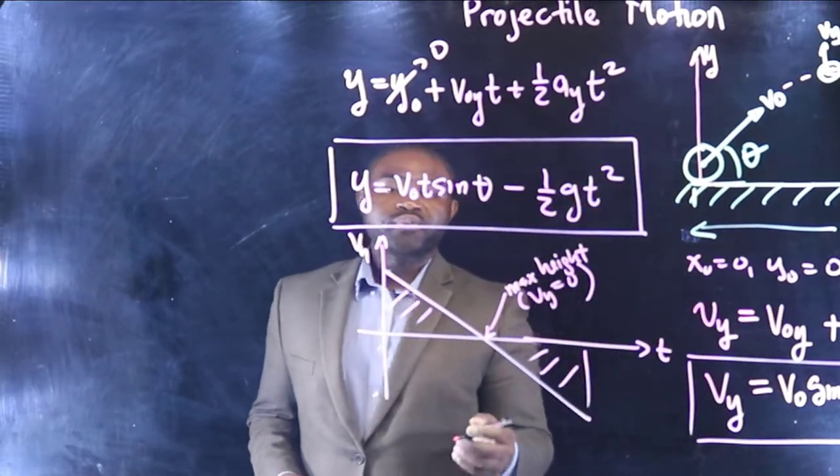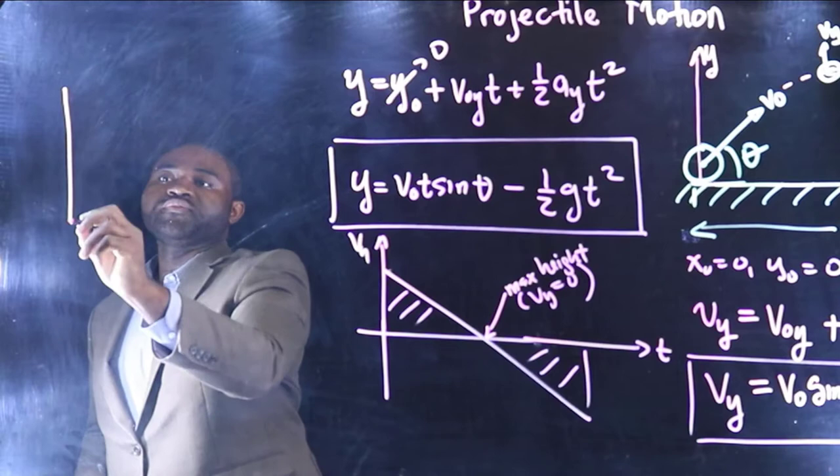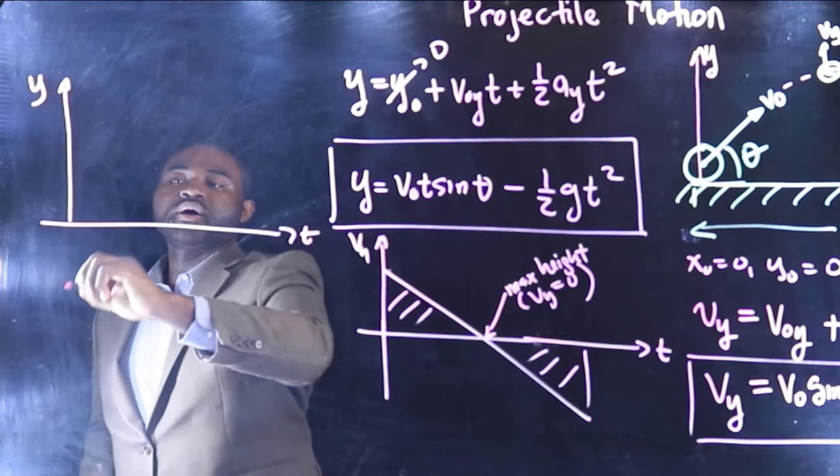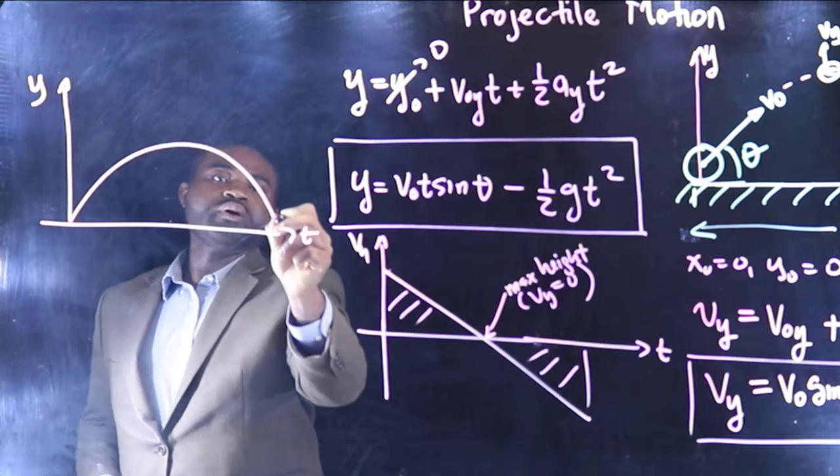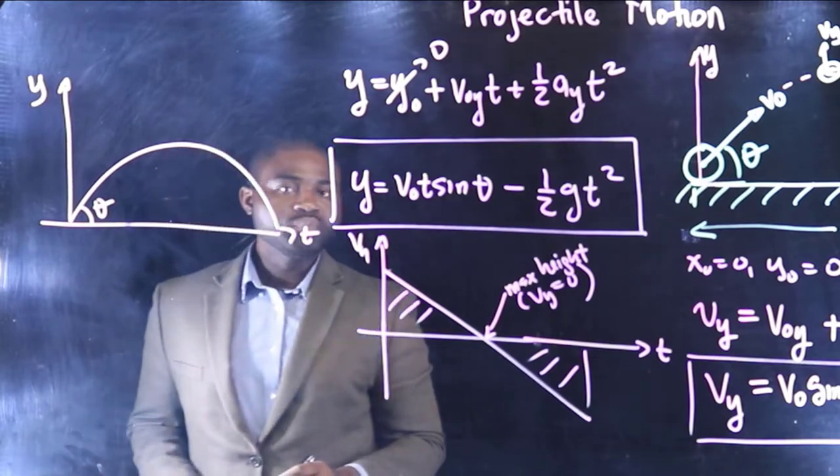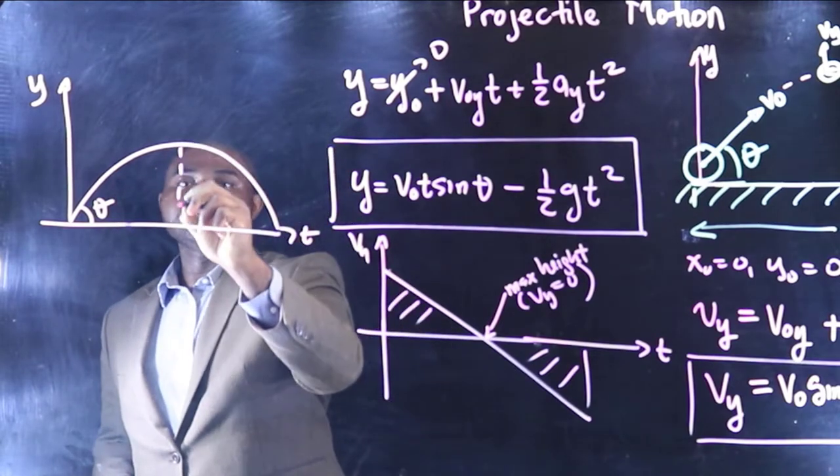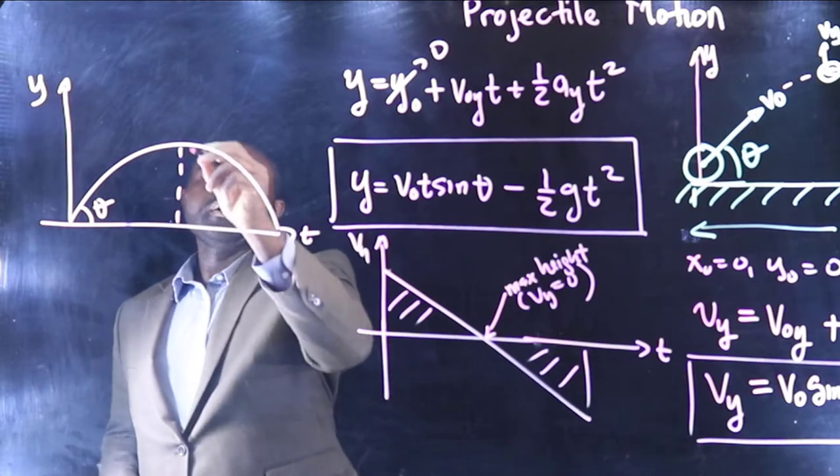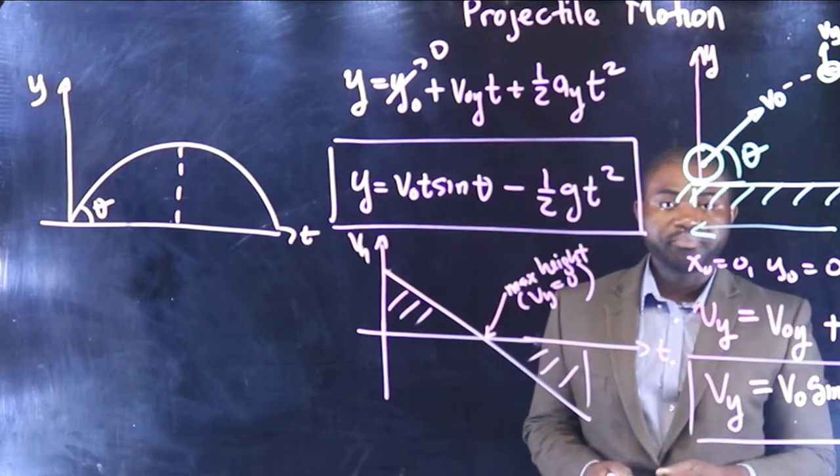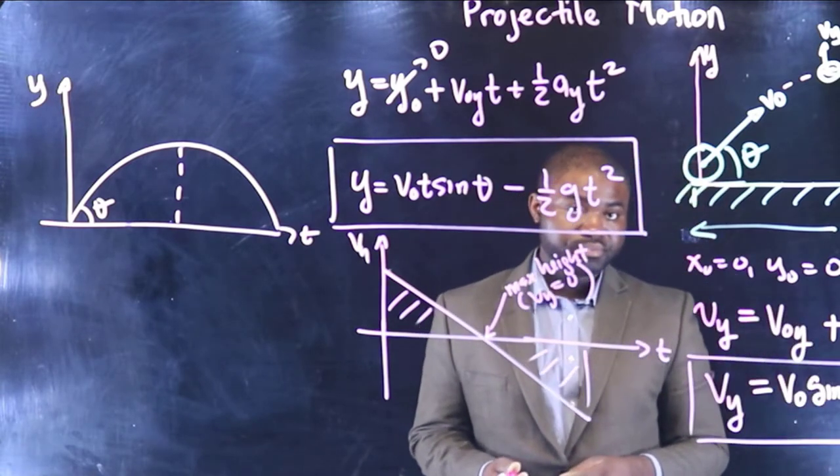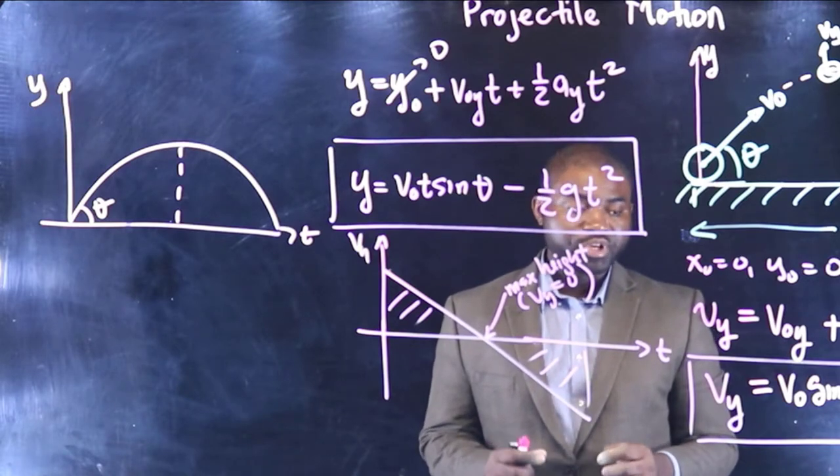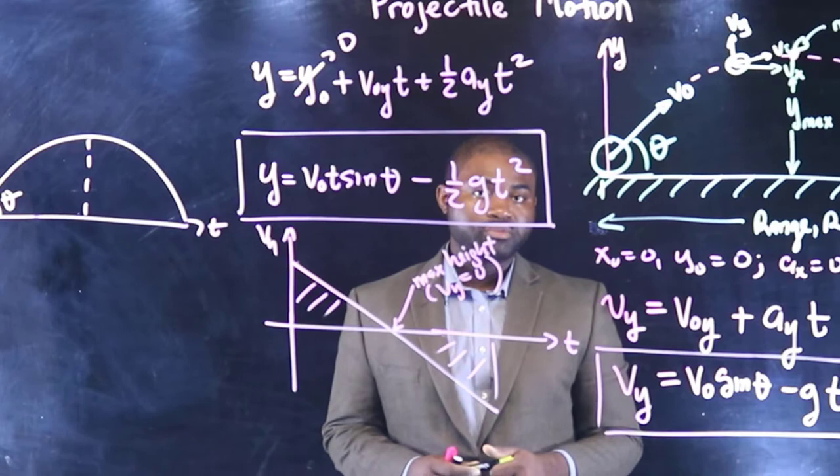And therefore, if we do the graph of y against t, it's going to be a projectile path just like you've seen. One thing is certain that the motion of a projectile is symmetrical in time and in position.